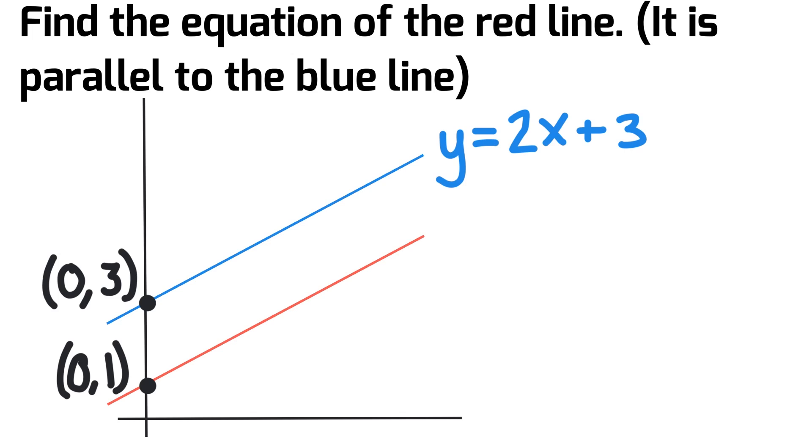So when we look at the two lines on the graph, the blue line is increasing and the equation is y equals 2x plus 3. And the red line is below that, but when we look at that line as well we know that it is increasing as well.